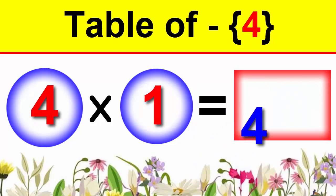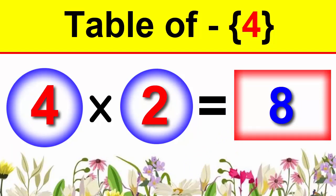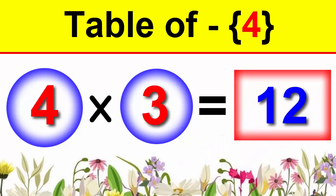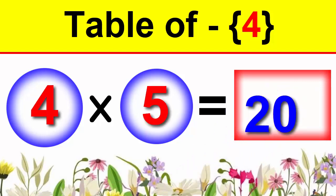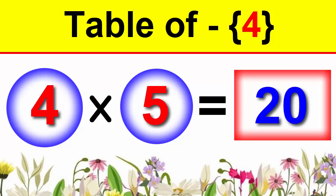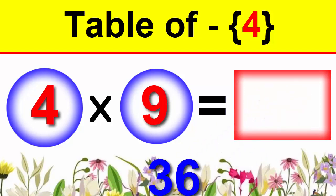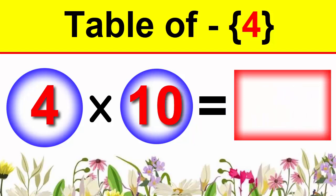4×1 is 4, 4×2 is 8, 4×3 is 12, 4×4 is 16, 4×5 is 20, 4×6 is 24, 4×7 is 28, 4×8 is 32, 4×9 is 36, 4×10 is 40.